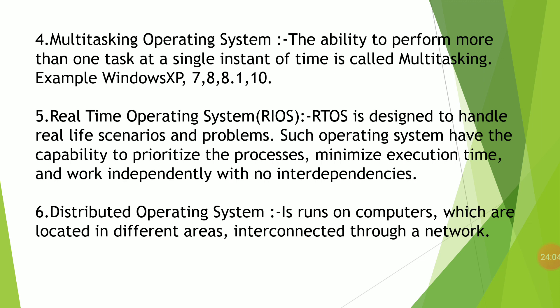Next is the distributed operating system. A distributed operating system runs on computers located in different geographical areas, interconnected through a network. It controls these interconnected systems and makes them appear to be a single computer. It allows all linked machines to access data, software, processes, and tasks over a common network from different computers regardless of their location on the globe.